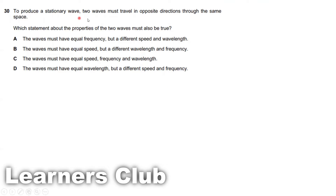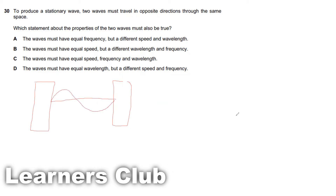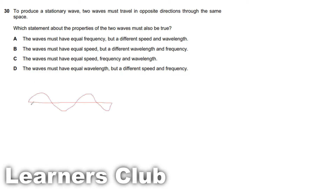Question 30. To produce a stationary wave, two waves must travel in opposite directions through the same space. A stationary wave is the superposition of a wave along with its reflected wave, which means the wavelength, frequency, and speed of both waves should be the same. The only difference is that they travel in opposite directions.